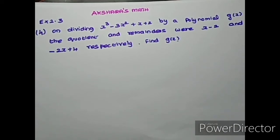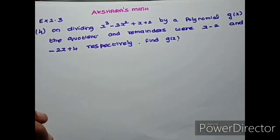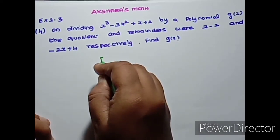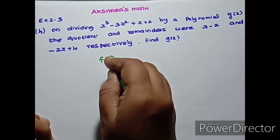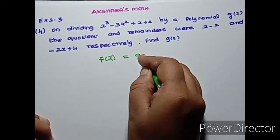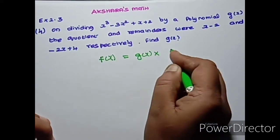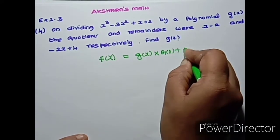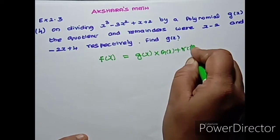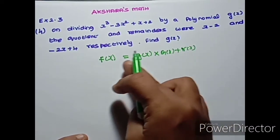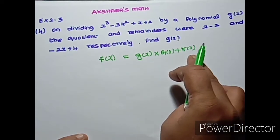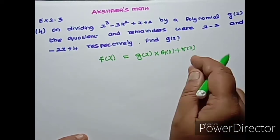If f of x is a polynomial, we will divide. The division algorithm for polynomials states: Dividend equals divisor into quotient plus remainder. That is, f of x is equal to g of x into q of x plus r of x.